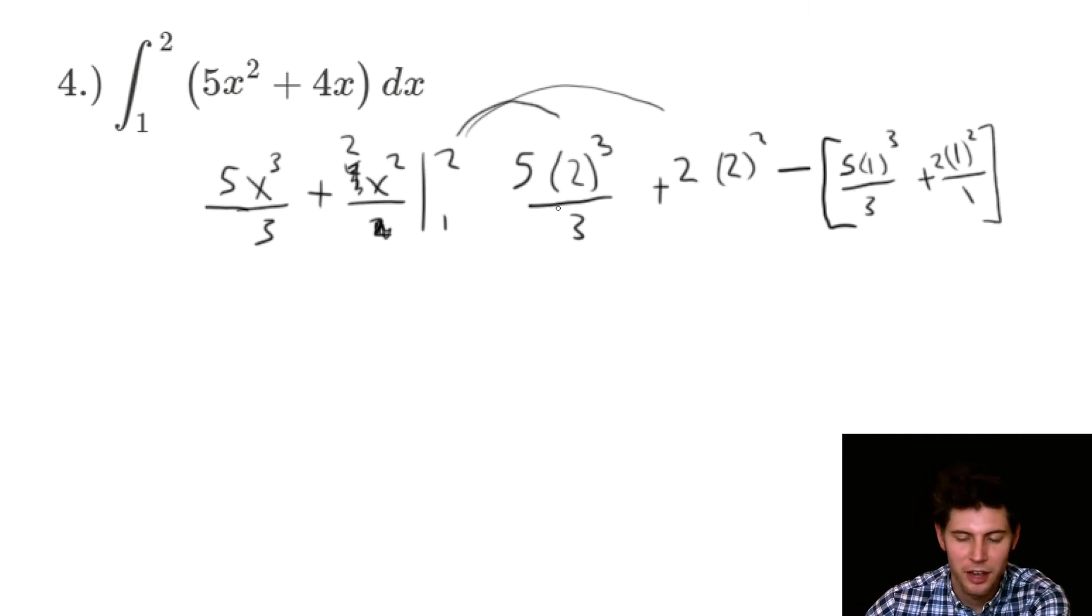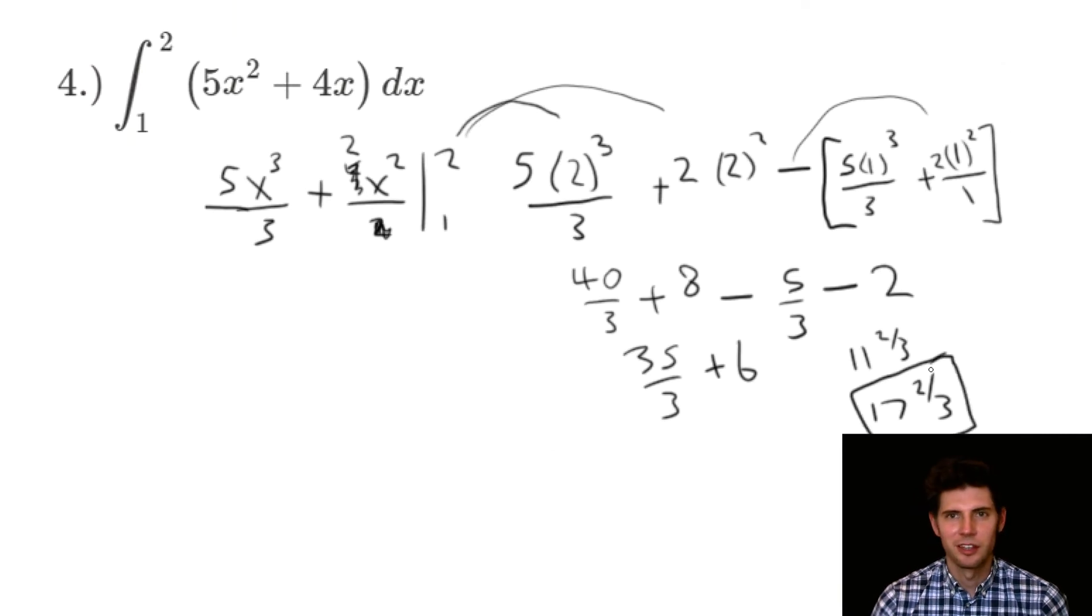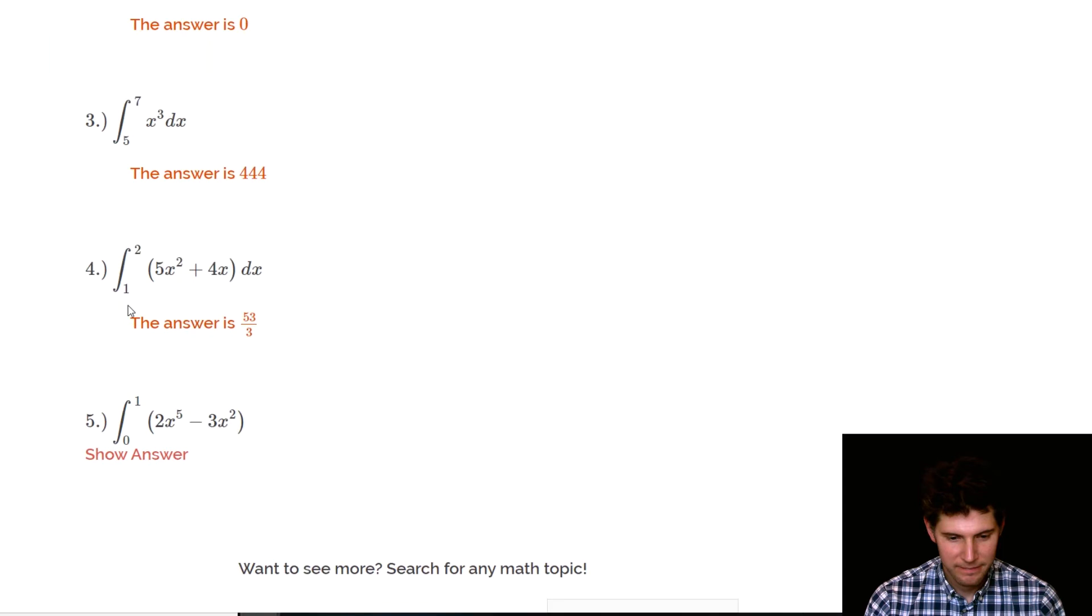It's going to be five times two cubed over three plus two times two squared, minus five times one cubed over three plus two times one squared. Two cubed is eight times five is 40 divided by three, plus two squared is four times two is eight, minus one cubed is just one, so this is going to be five thirds, and then one squared is still just one, so it's just going to be two over one. So 40 thirds minus five thirds is 35 thirds, and eight minus two is six. Three goes into 35 eleven times, and there's two left over, so it'd be 11 and two thirds plus the six, so it should be 17 and two thirds. 53 thirds. So we're good to go.